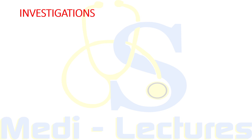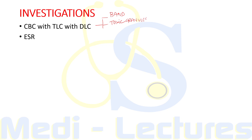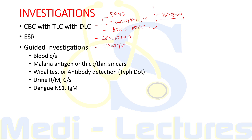For investigations in a fever patient, since the most common cause is infection, we first order a CBC with total leukocyte count and differentials. We also check the peripheral smear for band forms, toxic granules, or Döhle bodies — any of these suggest bacterial infection. Leukopenia is characteristically present in viral illnesses and also seen in typhoid, while thrombocytopenia is characteristic of viral infections like dengue fever.